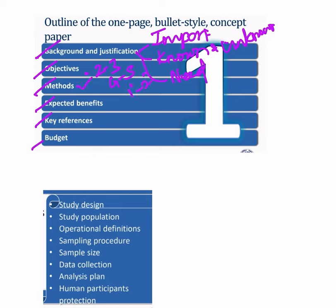Under methodology, we have to write under separate heads: study design and study population, operational definitions, sampling procedure, sample size, data collection methods, plan for analysis, and protection of human participants — all need to be mentioned under methodology.